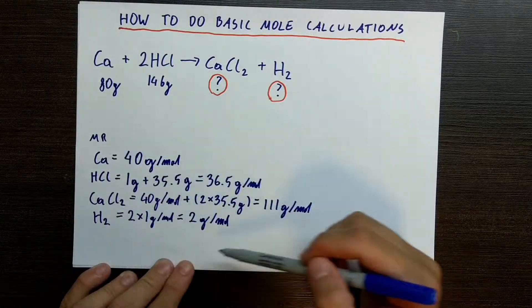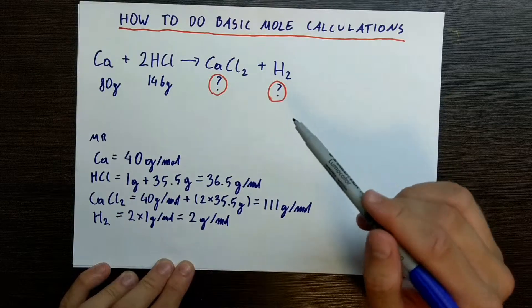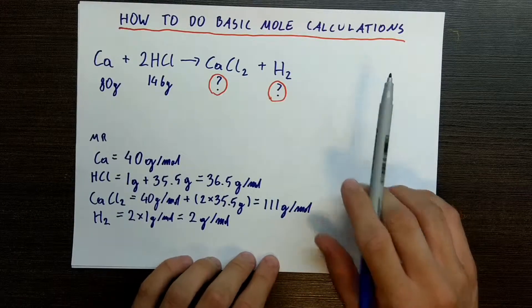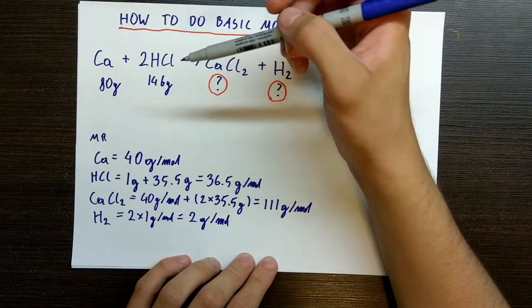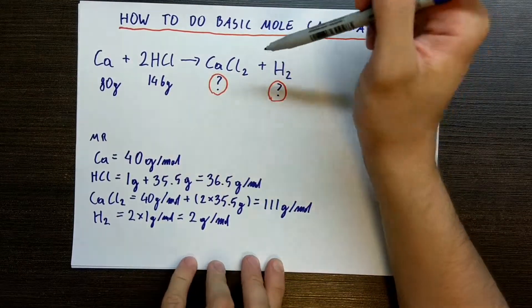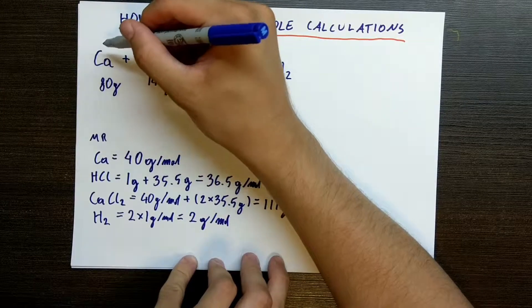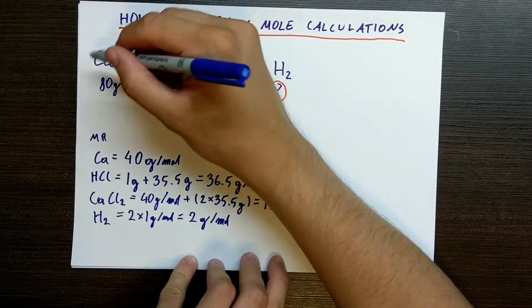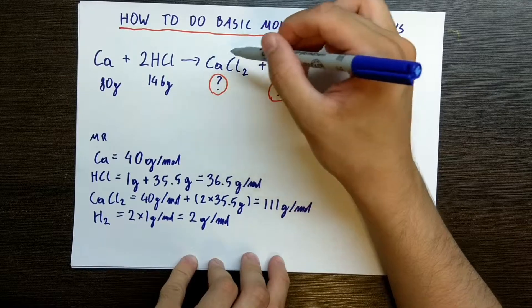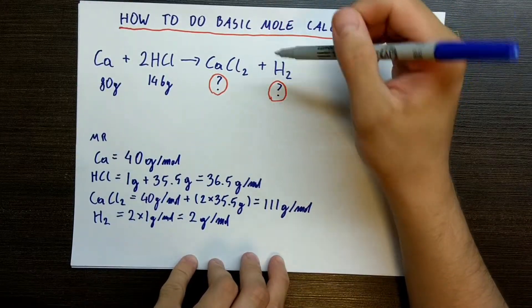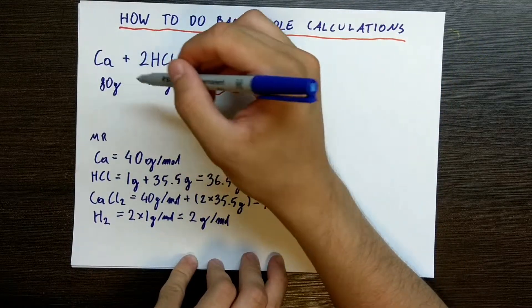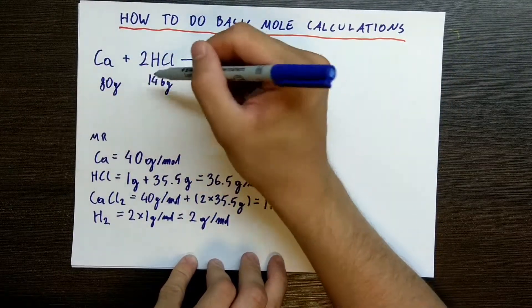Now we know the molecular weight of all the players in this reaction, so we can actually start figuring this out. We need to figure out how many moles we have of each reactant. This equation tells us 1 calcium plus 2 molecules of hydrochloric acid gives us 1 molecule of calcium chloride plus 1 molecule of hydrogen. The masses we are given may not actually be 1 mole and 2 moles — the ratios will be there, but they may appear at different scales.